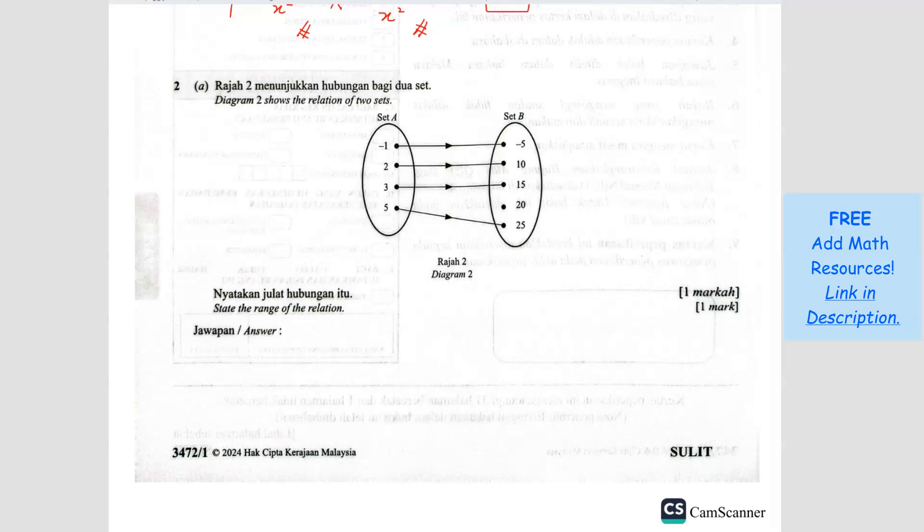Question number two. State the range of the relation. So we got set A and set B here. Set A would be the domain and set B is the co-domain.